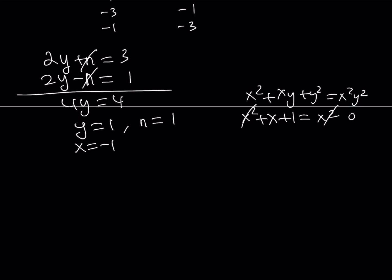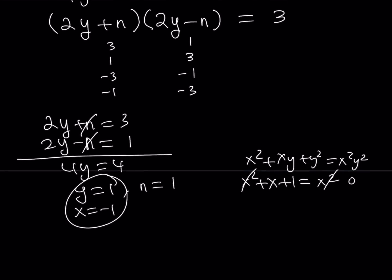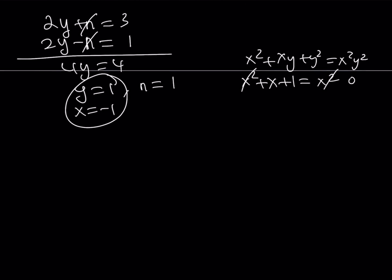So that is the case for the first scenario. Now, let's take a look at the second case scenario. If 2y plus n equals 1 and 2y minus n equals 3, they're just going to switch around. But guess what? From here we get the same y value. And when you plug in the same y value, obviously you're going to be getting the same x value. So it's not going to give us anything different.